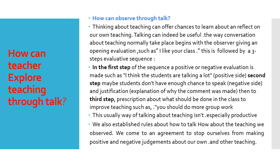In the three-step evaluative sequence: the first step is a positive or negative evaluation, such as 'I think that the students are talking a lot.' The second step is justification — for example, 'Maybe the students don't have enough chance to speak' — which is the negative side and an exploration of why the comment was made. The third step is a prescription about what should be done in the class to improve teaching, such as 'You should do more group work.' We also established rules about how to talk about the teaching we observed, agreeing to stop making positive or negative judgments about our own and others' teaching.